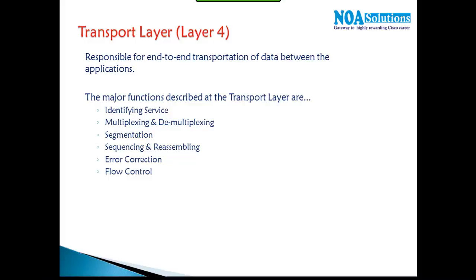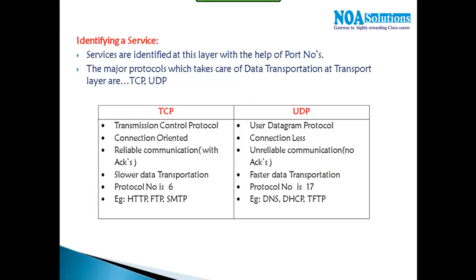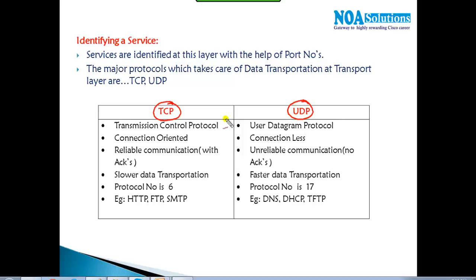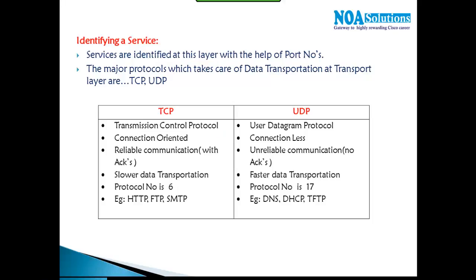The first job is identifying the service. There are two major protocols at the transport layer: TCP and UDP. TCP is the Transmission Control Protocol, which controls the flow of information and decides how traffic is sent. UDP does a similar job but works in a slightly different way.